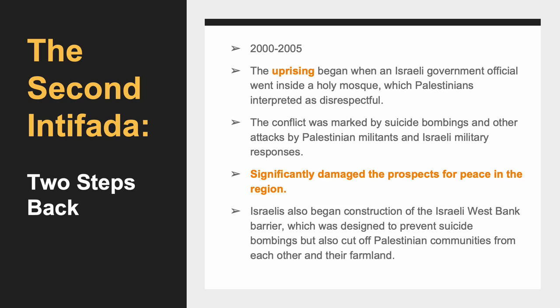The Second Intifada — Two Steps Back: The Second Intifada was a period of intensified conflict between Israelis and Palestinians beginning in 2000. The uprising began when an Israeli government official entered a holy mosque, which Palestinians interpreted as disrespectful. The conflict was marked by suicide bombings and other attacks by Palestinian militants and Israeli military responses, resulting in the deaths of thousands. It significantly damaged the prospects for peace and saw increased construction of the Israeli West Bank barrier, which prevented suicide bombings but also cut off Palestinian communities from each other and their farmland.